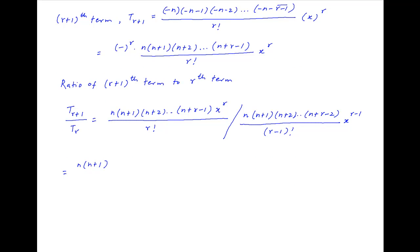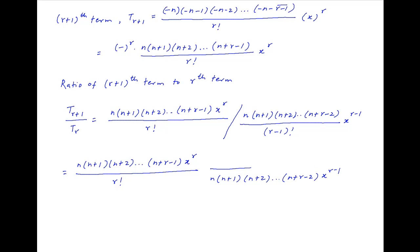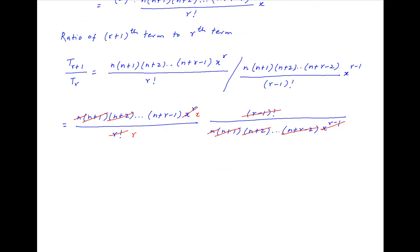This can be written as n(n+1)...(n+r-1) times x^r divided by r factorial, divided by n(n+1)...(n+r-2) times x^(r-1) multiplied by (r-1) factorial. The factorial terms cancel, leaving r in the denominator. The terms with x cancel, leaving x in the numerator. And n(n+1)...(n+r-2) cancels, leaving (n+r-1) in the numerator.